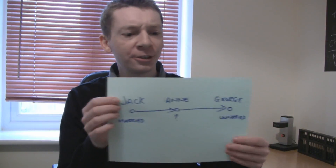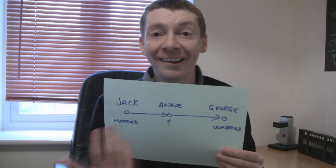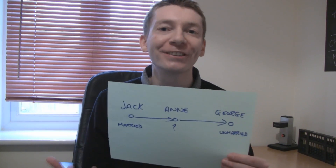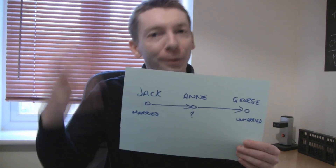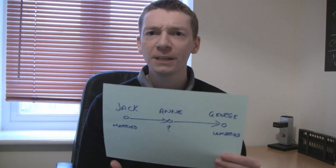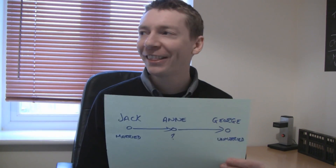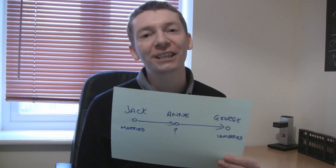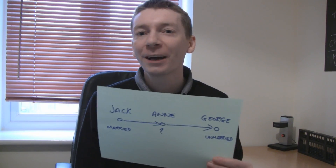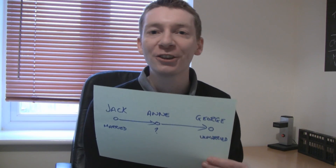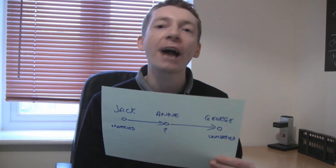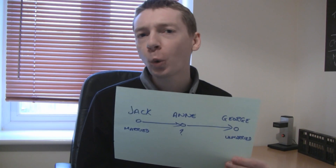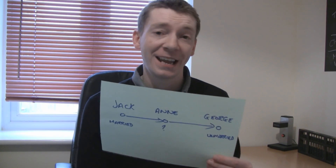One reason might be that the question doesn't say anything about where these people are standing. I can see that might be a problem for people who are less experienced at these kind of puzzles, because they're trying to apply it to the physical world — thinking, are these people standing in a line, are they standing in a triangle, can they look at two people at the same time? But people who are more experienced with these kind of puzzles will know that when it says something like Anne is looking at George, that is simply a relation between two objects.